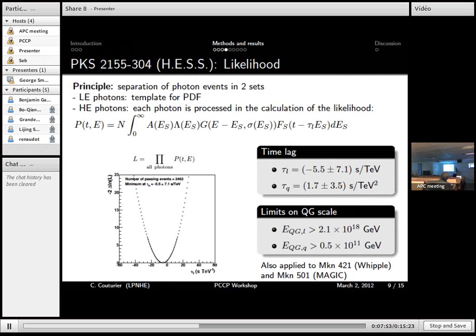So those are the time lags for a linear and a quadratic model. And this leads to also limits on quantum gravity scale for linear and quadratic models. Those are the best limits obtained so far with AGNs.